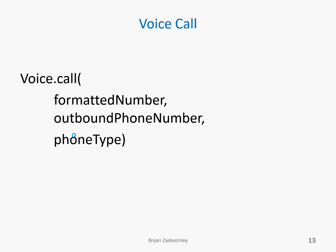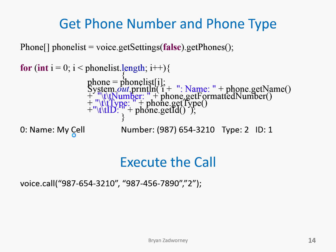Creating a voice call is a little more complicated — the documentation is extremely lacking on this. You're not going to make your laptop's speaker ring. What you're doing is actually making your phone — your cell phone or whatever phone number you choose — ring, and then it's going to ring to the other phone number you choose, and you'll be able to talk through each other. The command is voice.call. You pass in a string of the formatted number, a string of the outbound phone number, and then the phone type. Figuring out the phone type isn't really well documented.